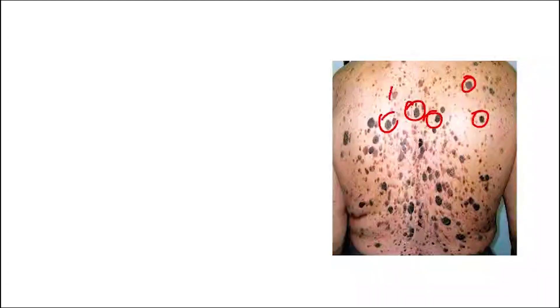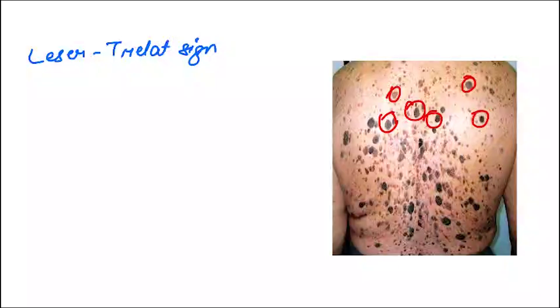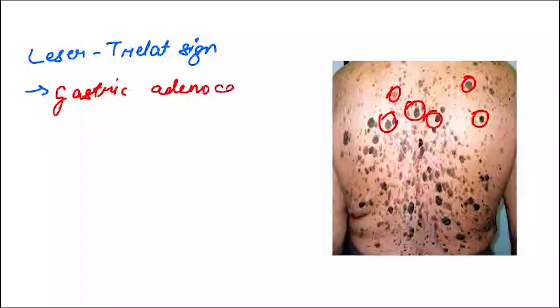This you may have read in surgery also, or you will read it in future. You can see multiple seborrheic keratoses. The sign is very important. It is known as Leser-Trélat sign. Multiple seborrheic keratoses, and you must think of an underlying malignancy. The most commonly associated malignancy is gastric adenocarcinoma.